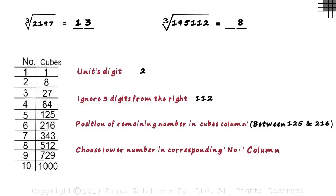So from the numbers column, we choose the lower number among 5 and 6. It is 5.